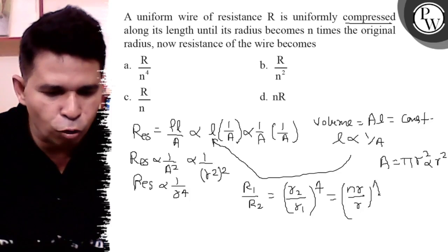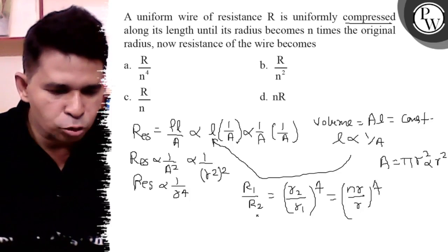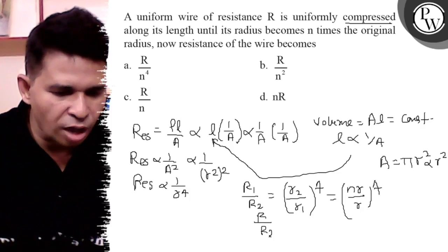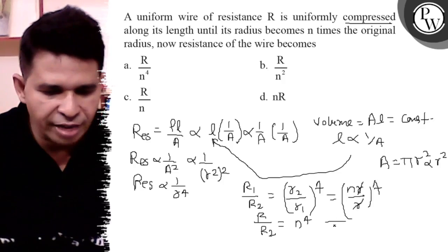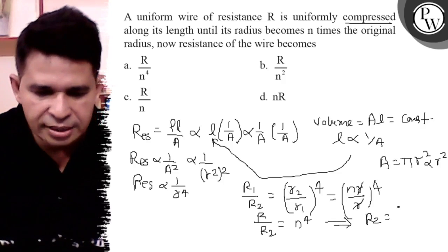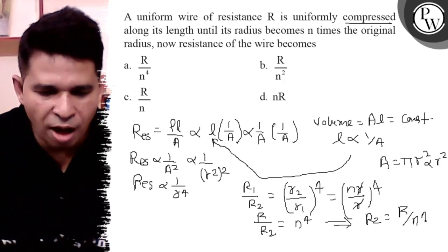R to the power 4, and what is R₁? It is R. So R upon R₂ value is n⁴ because small r cancels out. So what is the value of R₂? It is nothing but R upon n to the power 4.